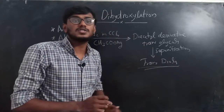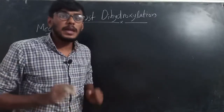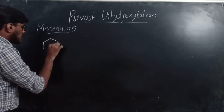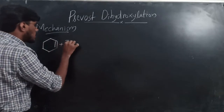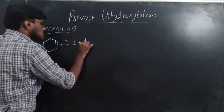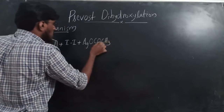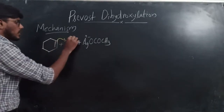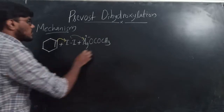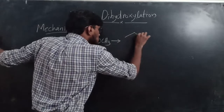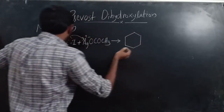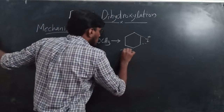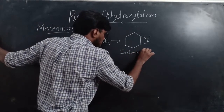Next we are going to check the mechanism of the Prevost dihydroxylation reaction. In the first step, an alkene reacts with I2 and silver acetate (CH3COOAg). The alkene's pi electrons attack iodine, and the iodine leaves with silver, forming an iodonium ion — a cyclic intermediate with a positive charge on iodine.